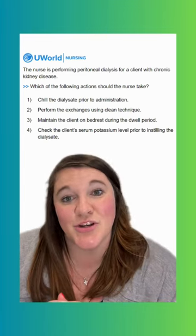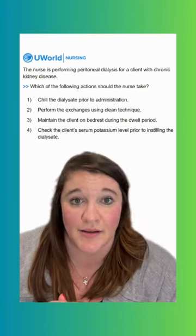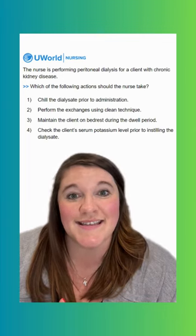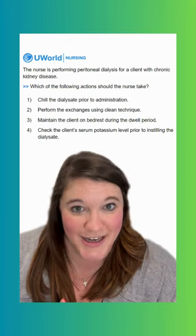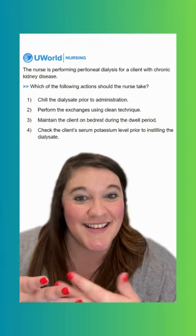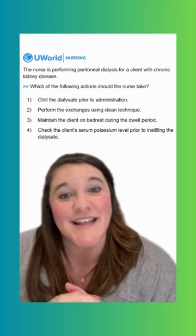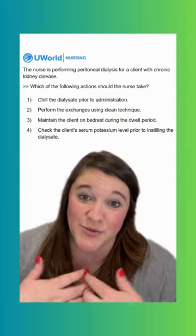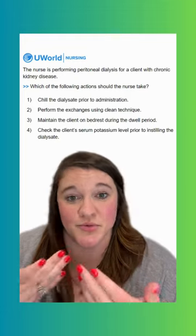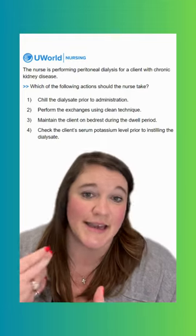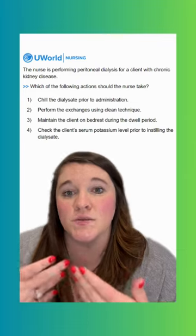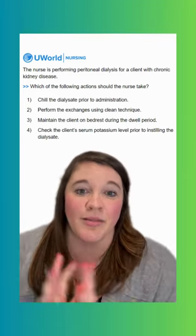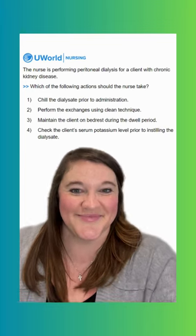Option four says to check the client's serum potassium level prior to instilling the dialysate — this is the correct option. With dialysis we can have electrolyte imbalances; one of those is a potassium imbalance. When we are pulling extra fluid we can also lose potassium, which could give us hypokalemia. We could see EKG changes with that, so we want to make sure we are monitoring our client's electrolyte levels throughout their dialysis treatment. See y'all tomorrow.